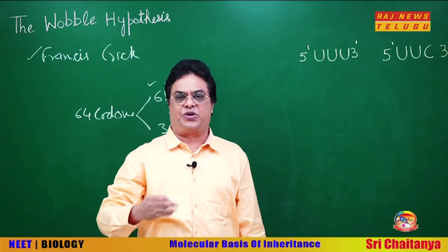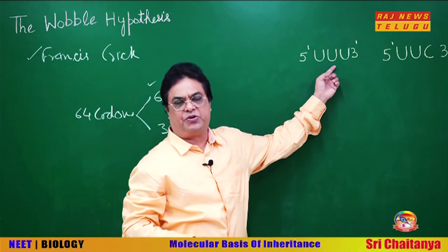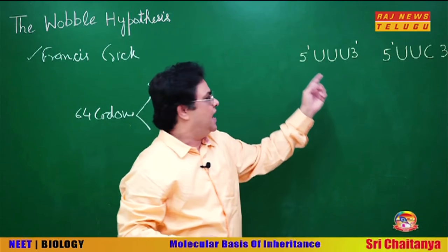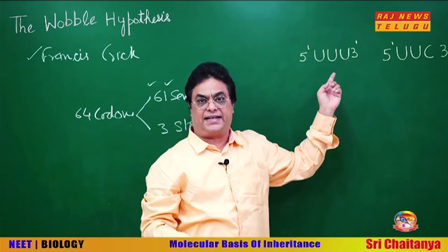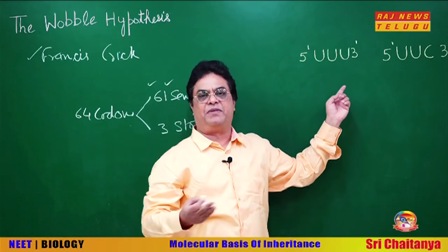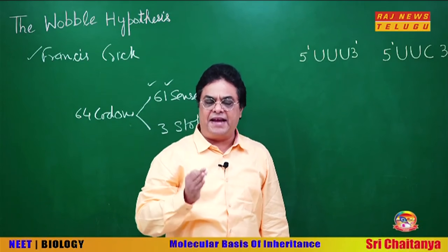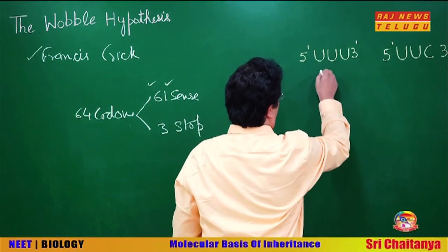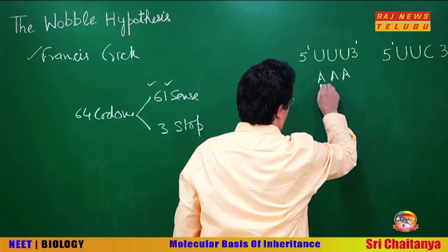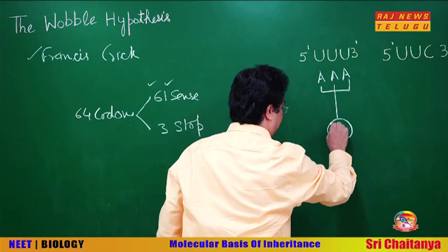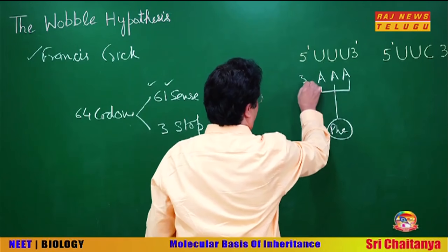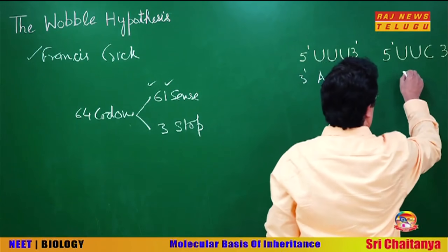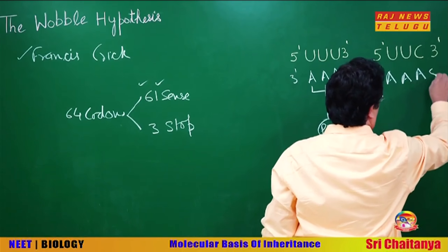Crick clarified this by saying that for codon-anticodon interaction, only the first and second nucleotide of the codon are important. At the third nucleotide of the codon, an unusual pairing can take place which does not follow the usual complementary base pairing. As a result, the same tRNA can decode more than one codon. For example, a tRNA having the anticodon AAA and carrying phenylalanine can decode both UUU and UUC.